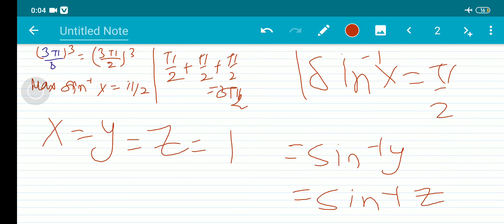So by this we can conclude that x is equal to y is equal to z is equal to 1.